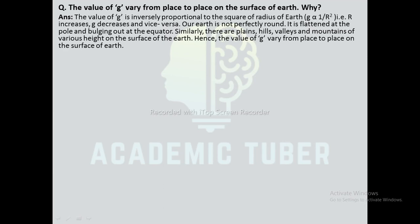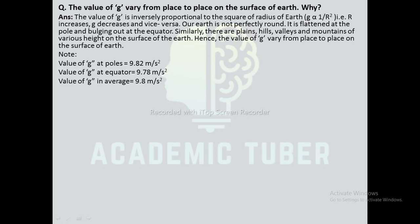Since g ∝ 1/r², as r increases g decreases. The Earth is not perfectly round — it is flattened at the poles and bulges at the equator, with plains, hills, valleys, and mountains of various heights. Hence g varies from place to place. Value of g at poles is maximum (9.82 m/s²) because polar radius is shorter. Value of g at equator is less (9.78 m/s²) because equatorial radius is greater. The average value of g is taken as 9.8 m/s².